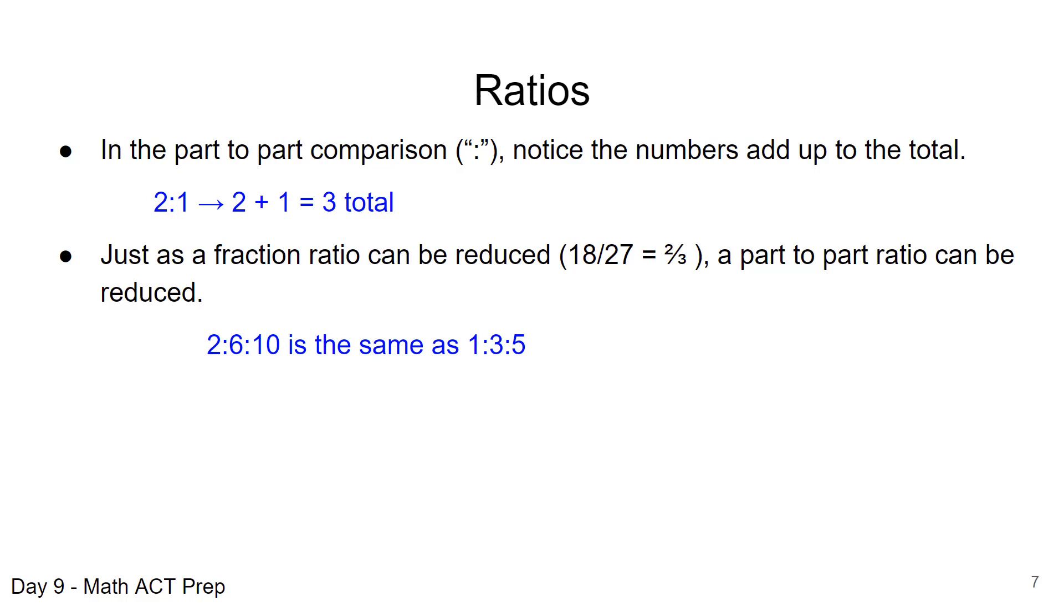We can reduce some, like here even we have the 2 to 6 to 10 that is the same as 1 to 3 to 5. We divided each of those components of the ratio by 2, and also vice versa we can increase those by a factor, a multiple. In the first case here we multiplied each of the values by 4.